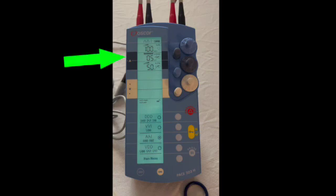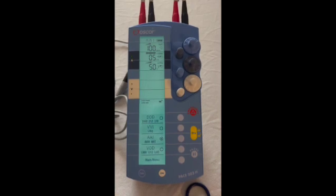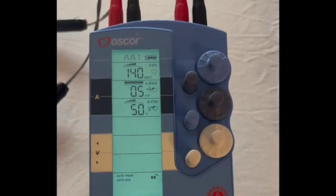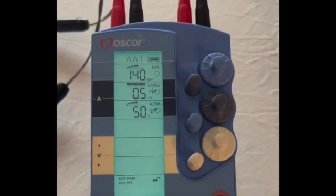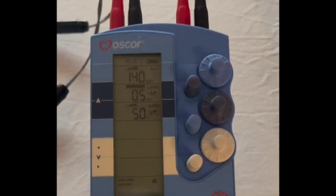Let's talk about these little lights on the side. The sensing light flashes when the pacemaker sees native cardiac electrical activity and inhibits itself. The light next to stim flashes when the pacemaker paces. This can be helpful when trying to troubleshoot pacemaker problems.